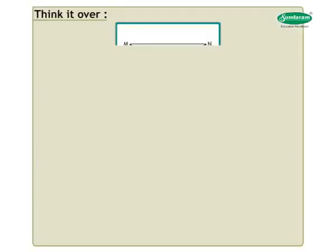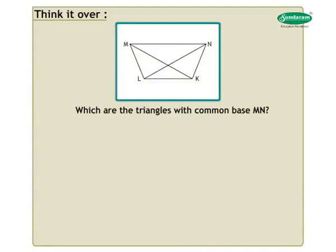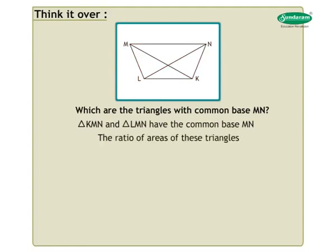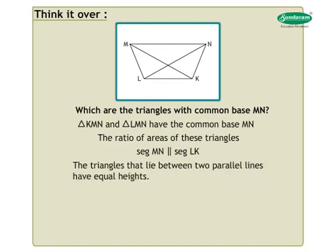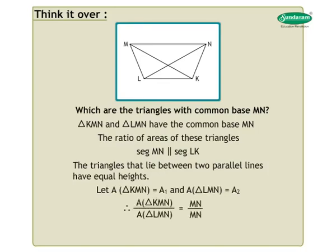Think it over. Look at the figure. Which are the triangles with common base MN? In the figure, triangle KMN and triangle LMN have the common base MN. Now let's find the ratio of areas of these triangles. Segment MN is parallel to segment LK, and triangles that lie between two parallel lines have equal heights. Let area of triangle KMN equal A1 and area of triangle LMN equal A2. Therefore, area of triangle KMN upon area of triangle LMN equals MN upon MN, so A1 upon A2 equals 1 upon 1.